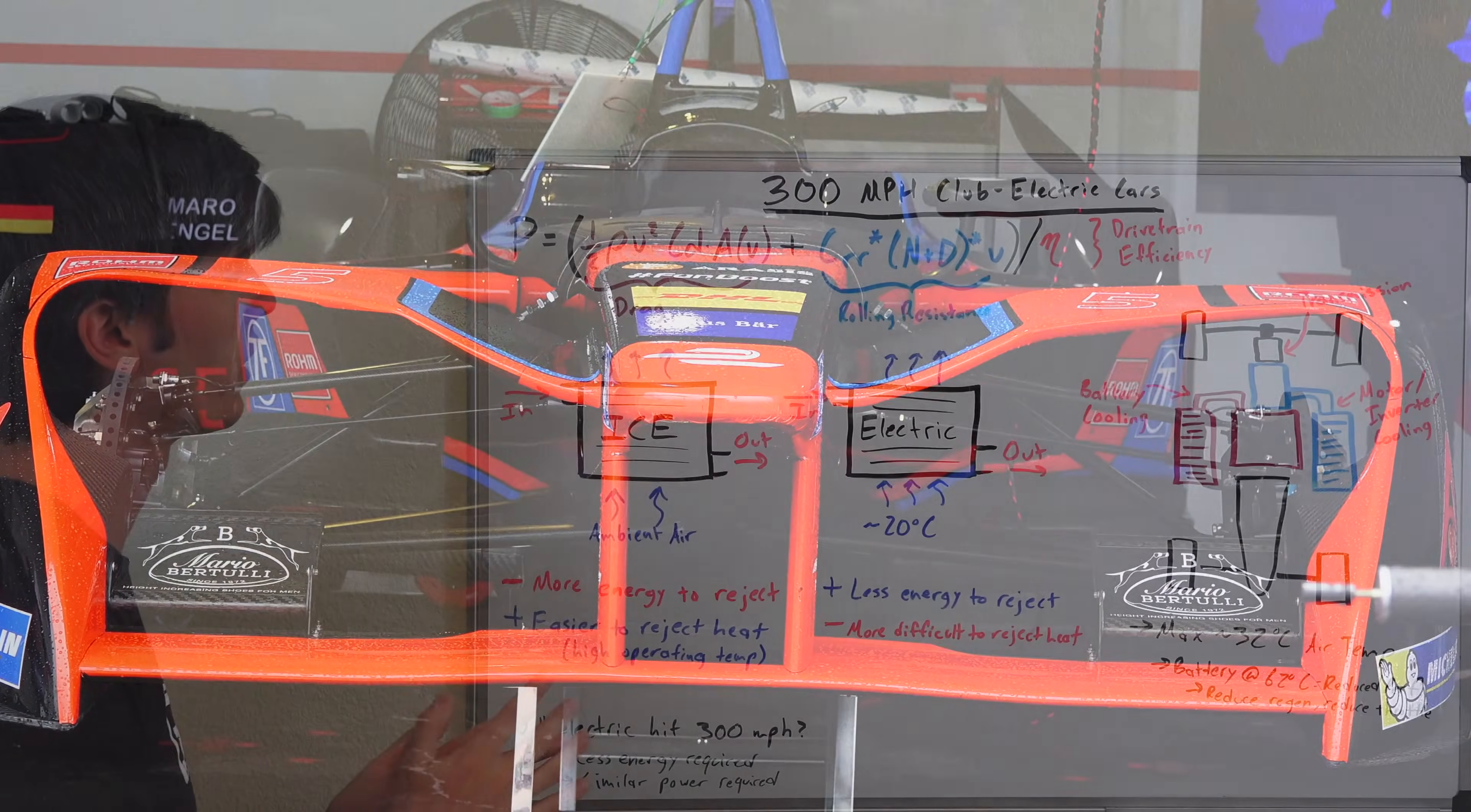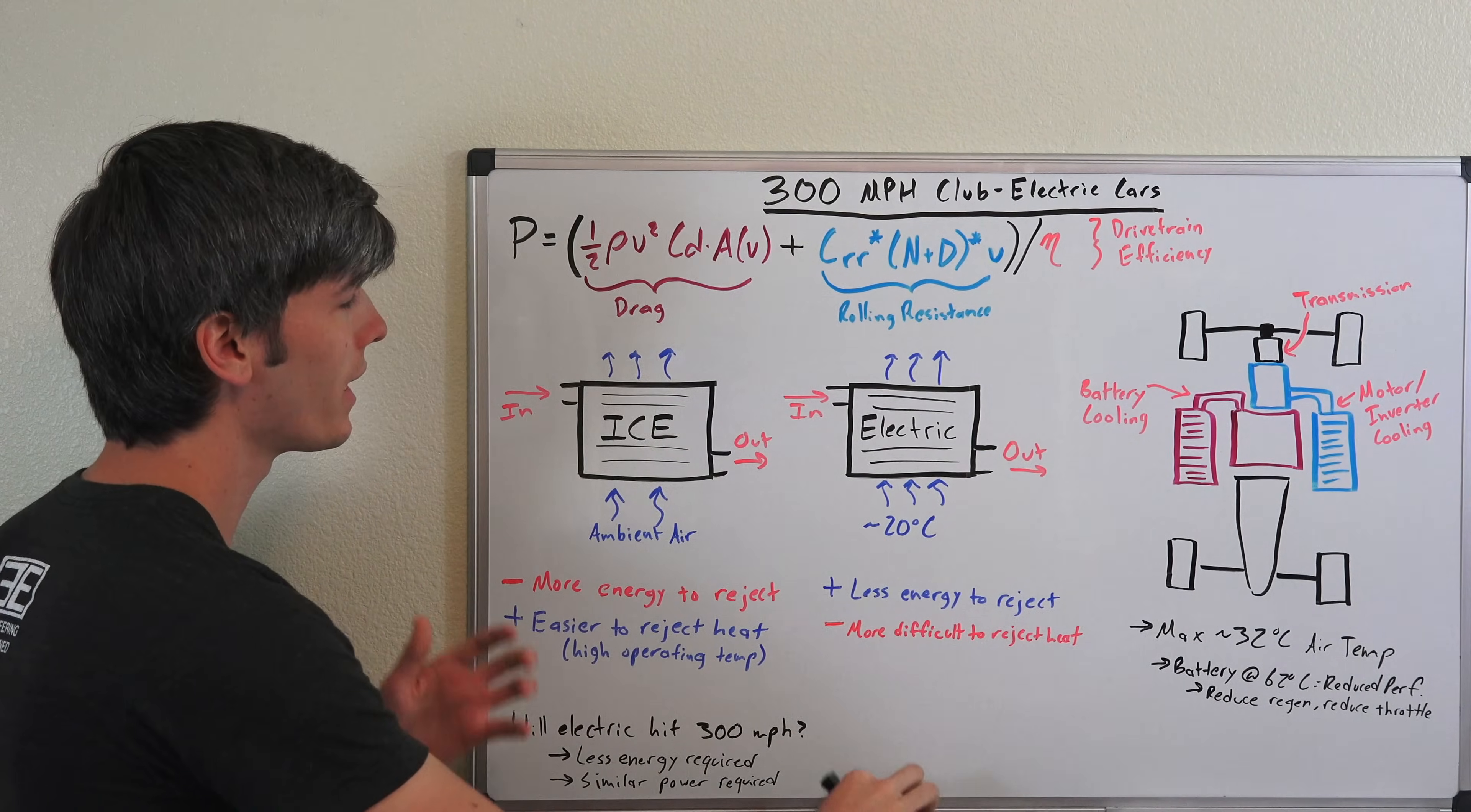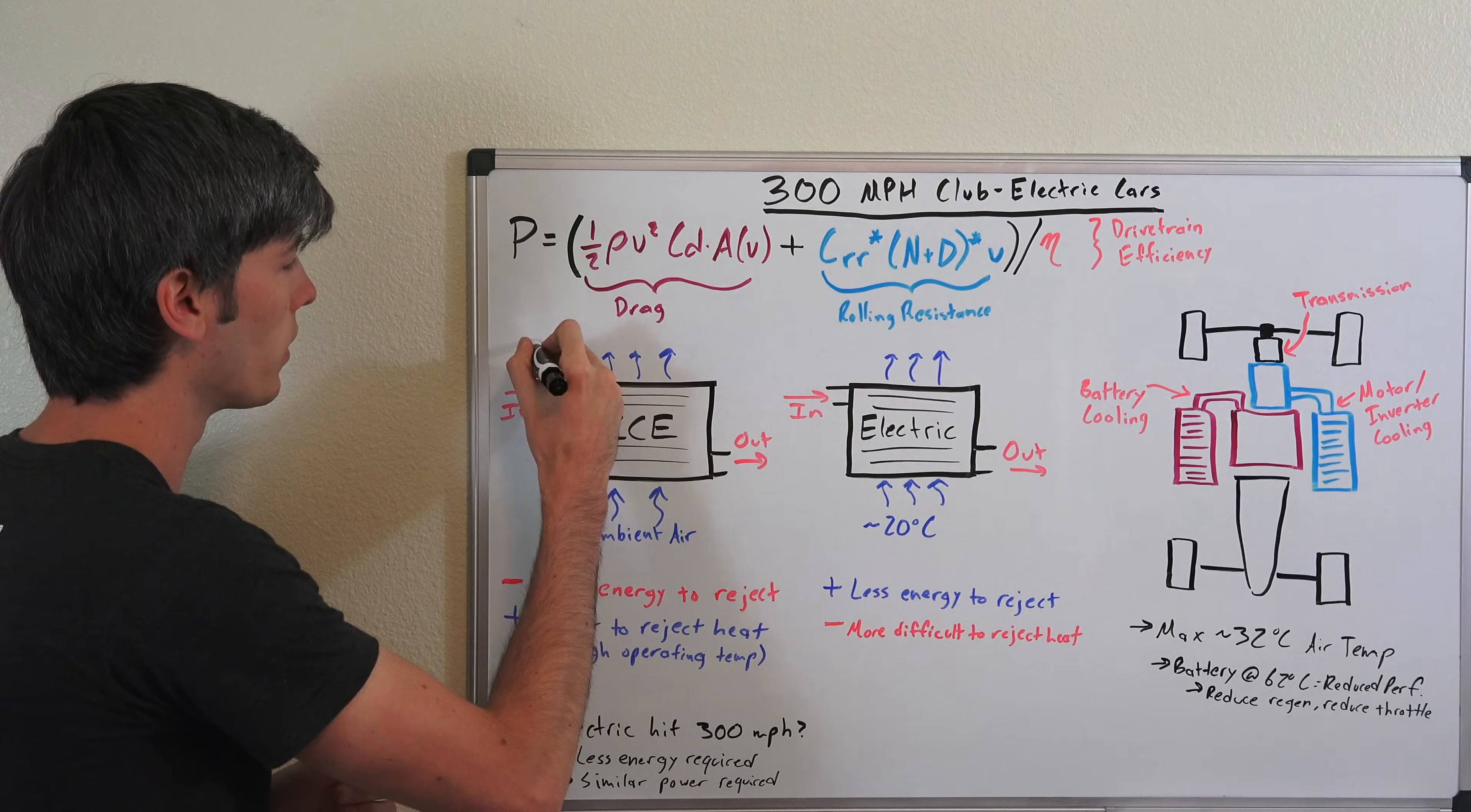Now with internal combustion engines this coefficient of drag is heavily influenced by the cooling system. Because you need all of that extra air to cool down the engine, the transmission, things like that. And so could an electric vehicle have an advantage in this scenario? And one of the interesting things to think about and something that's not often thought about when comparing these two systems is the fact that internal combustion engines operate at a pretty high temperature, so about 200 degrees Fahrenheit or about 95 degrees Celsius.